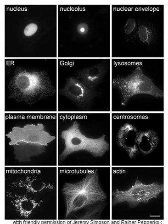Most cellular activities take place within the cytoplasm, such as many metabolic pathways including glycolysis, and processes such as cell division. The concentrated inner area is called the endoplasm and the outer layer is called the cell cortex or the ectoplasm. Movement of calcium ions in and out of the cytoplasm is a signaling activity for metabolic processes. In plants, movement of the cytoplasm around vacuoles is known as cytoplasmic streaming.